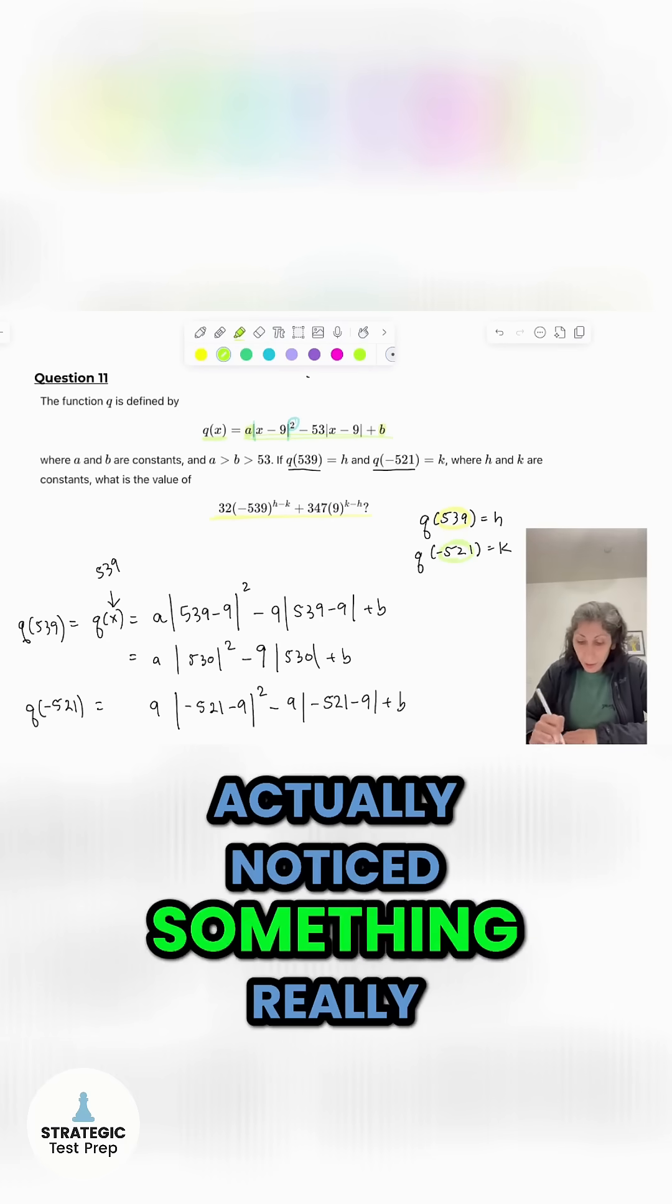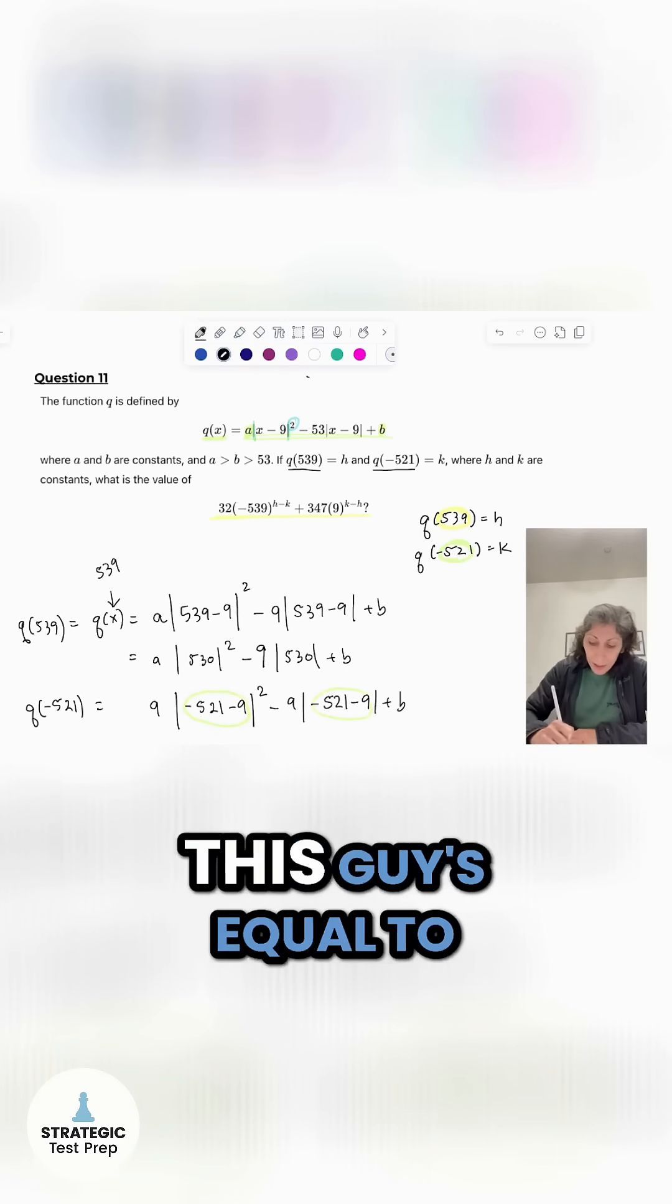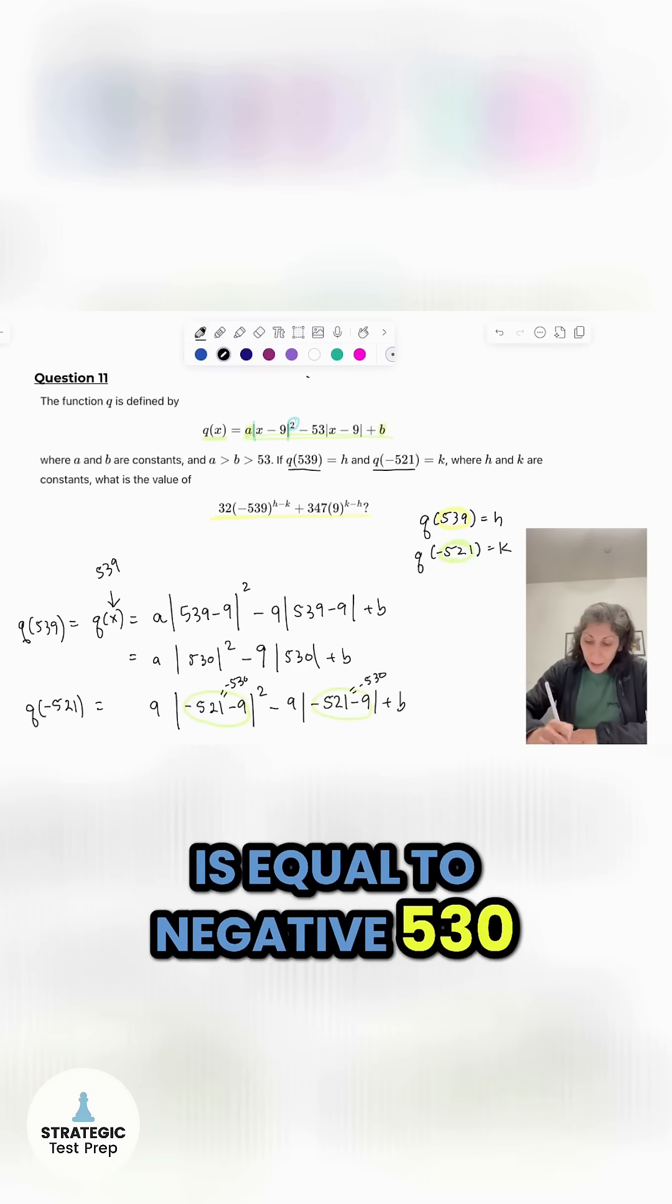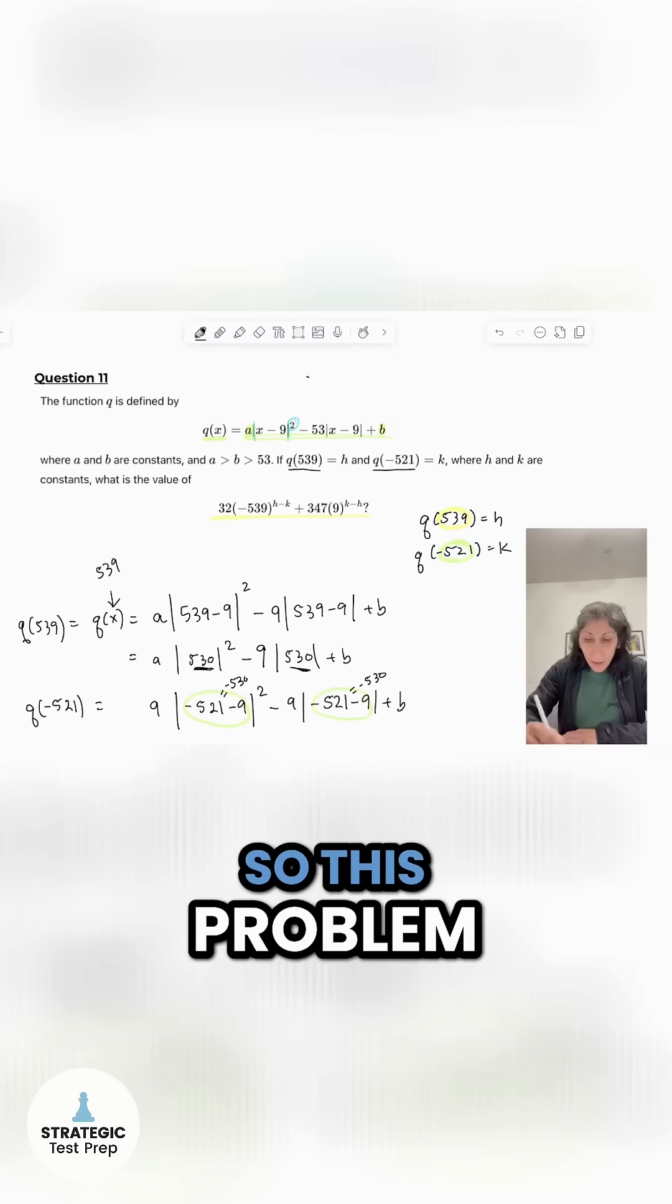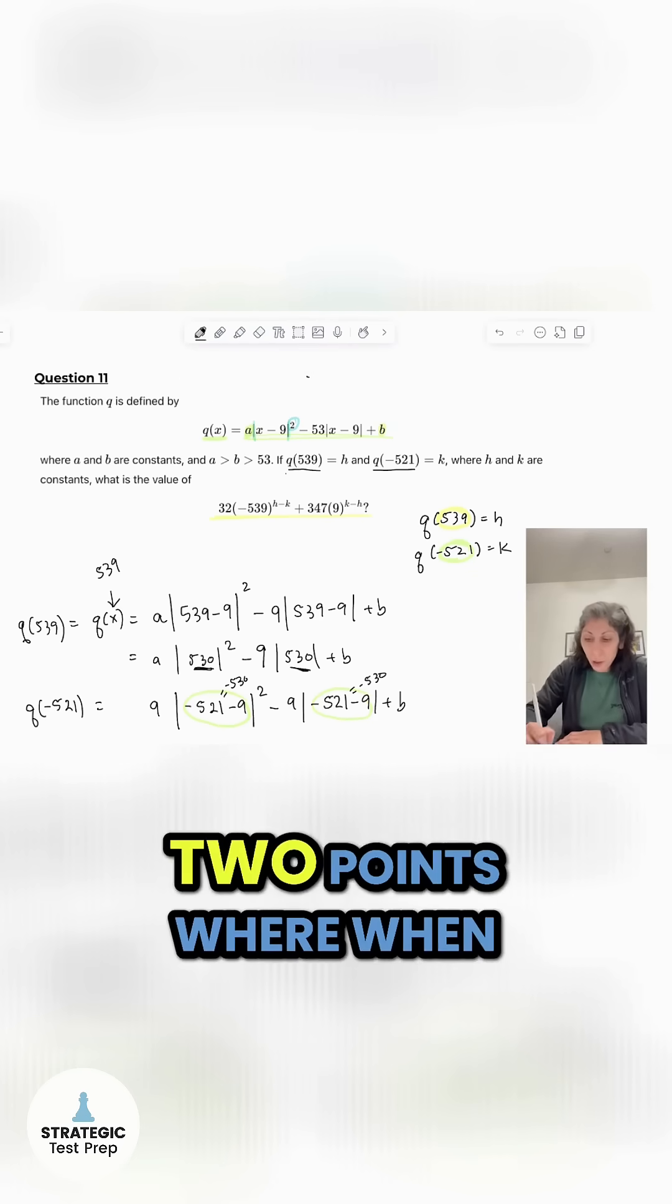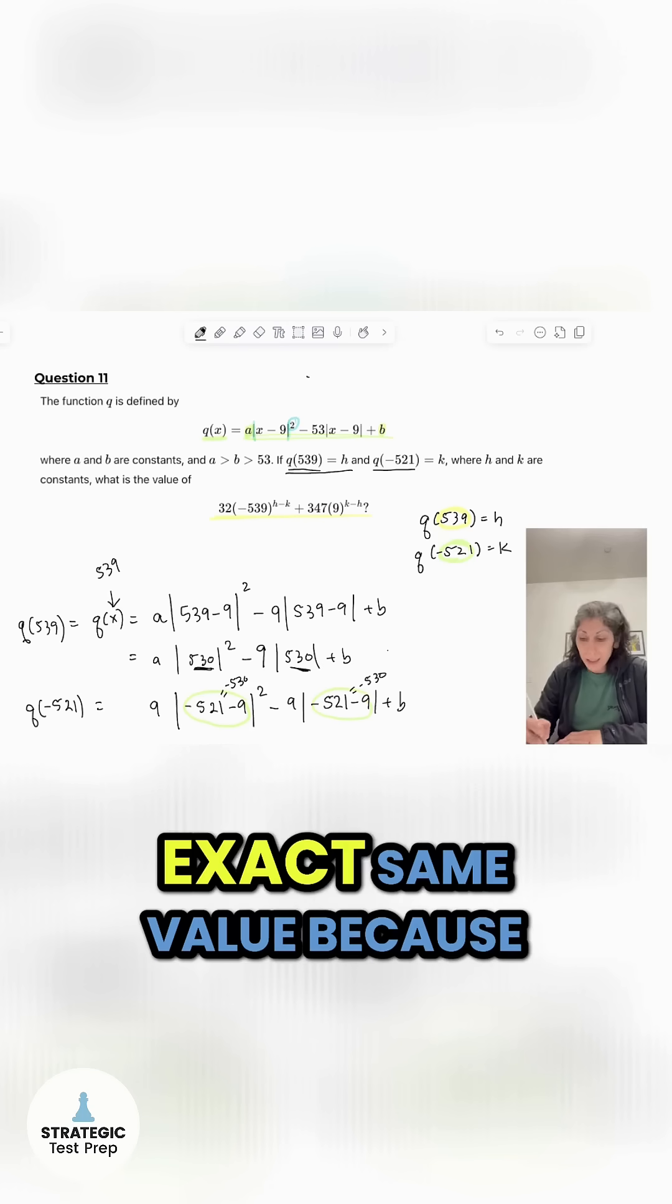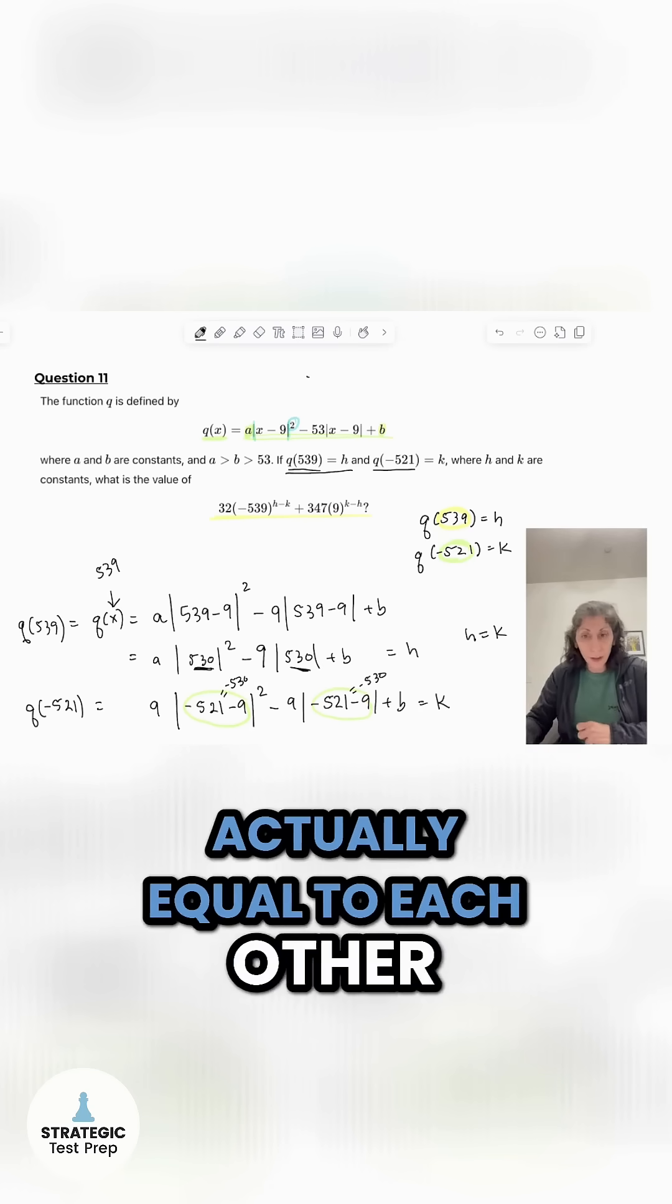So I actually noticed something really quickly and you might have too. Do you see these numbers right here? This guy's equal to negative 530 and this is equal to negative 530. Same thing right here. How interesting is that? So this problem, they've basically given us two points where when I plug the numbers in, I'm actually getting the exact same value because the expressions are the same. H and K are actually equal to each other.